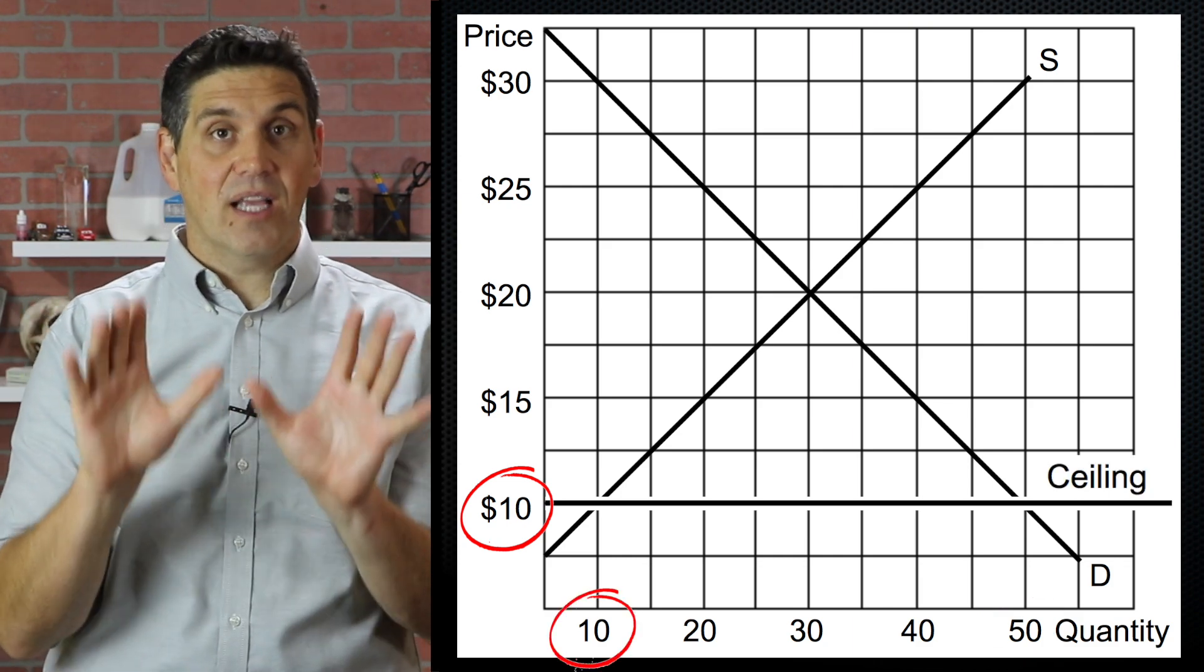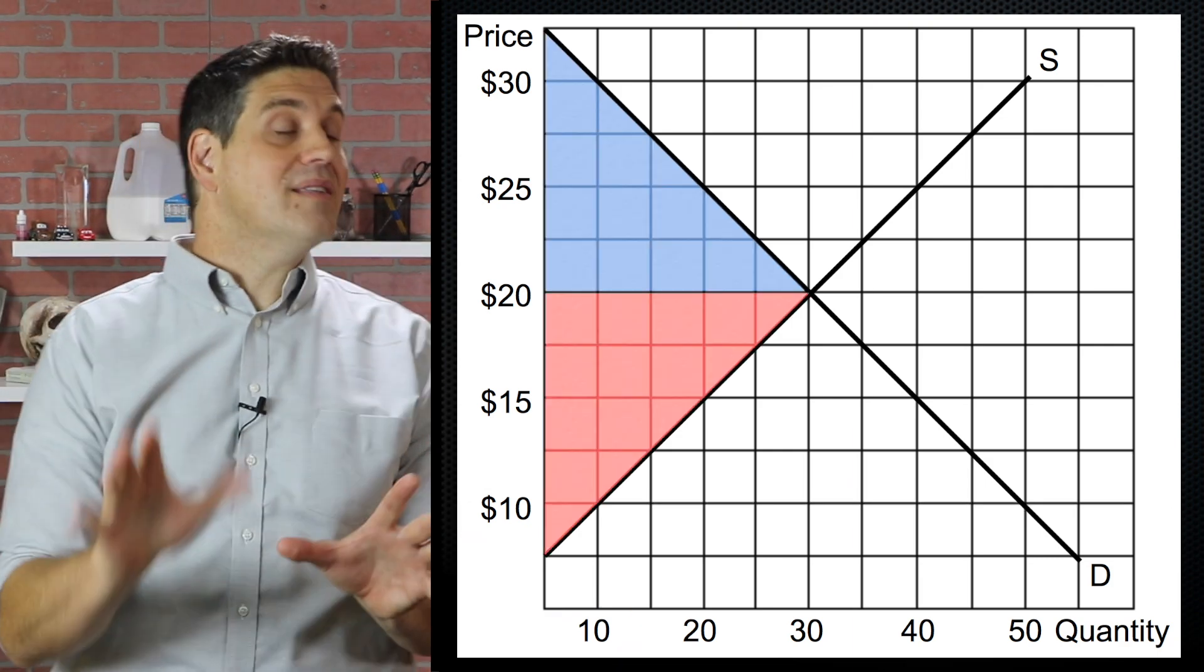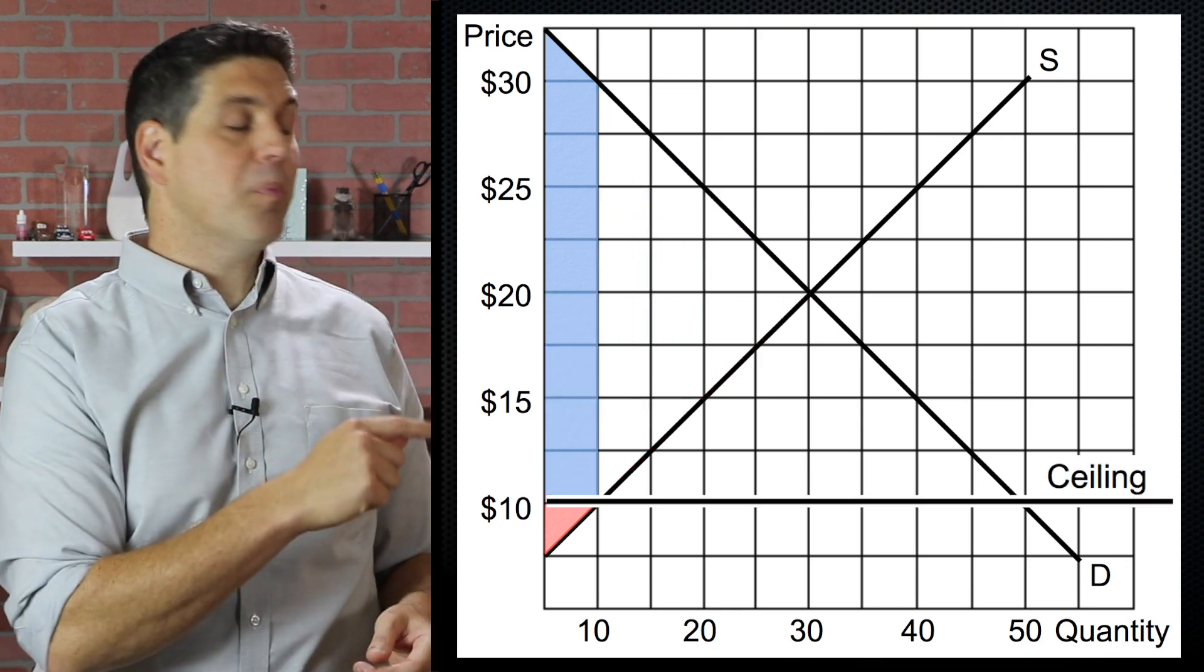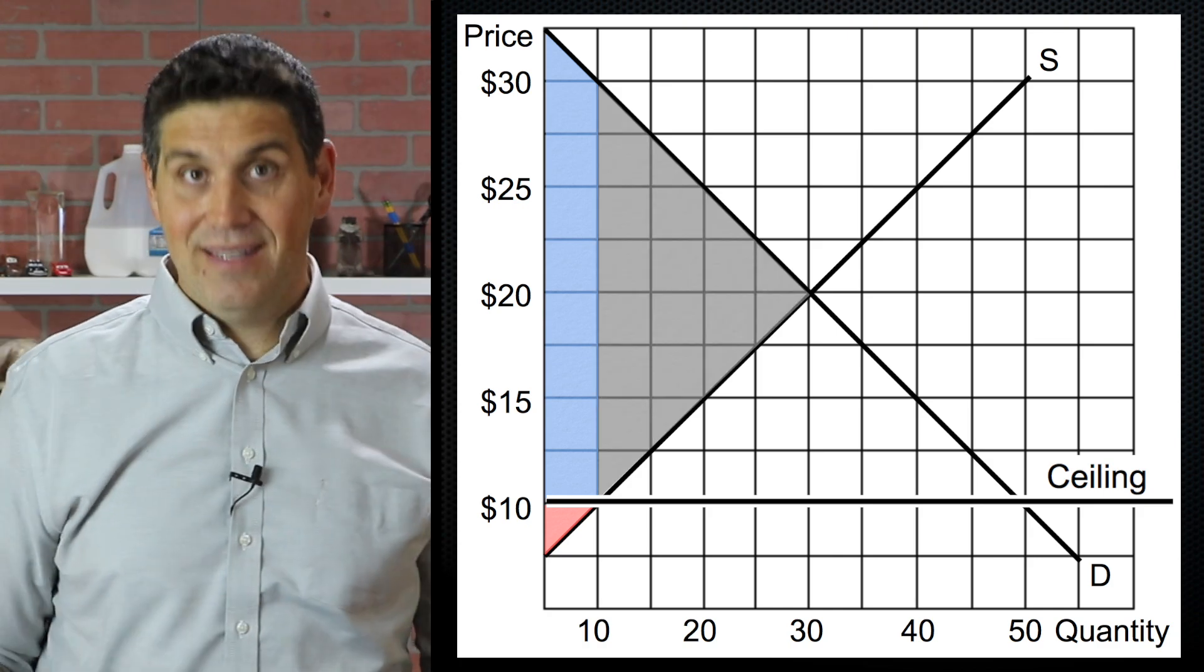This is a price ceiling. It's a government decree that keeps the price from going up to equilibrium. Now notice that it also changes the consumer and producer surplus. Producer surplus is a lot smaller, consumer surplus is here, and that's going to lead to deadweight loss.